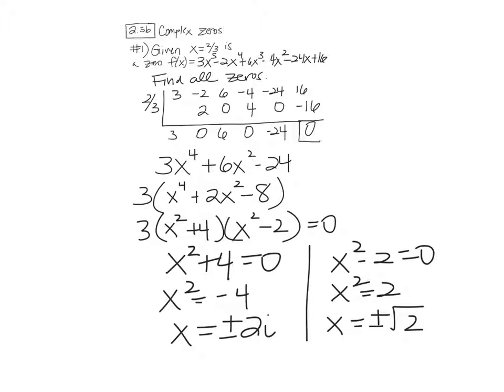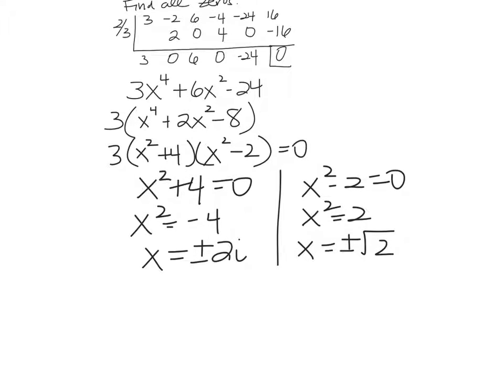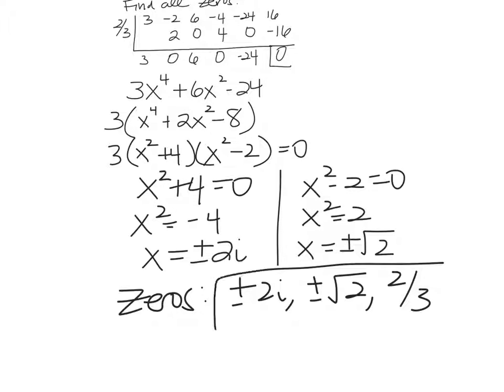All right, so let's go back to the top. We've done all we can. It says, given that two-thirds is a zero, find all the zeros. And so you would list them. Here are the zeros: plus or minus 2i, plus or minus rad 2, and two-thirds. And there they are. And I found 5 of them, which, there are 5 zeros. So I'm like, cool. I found 5.